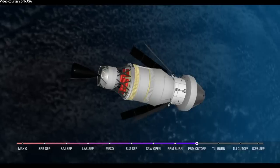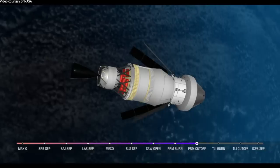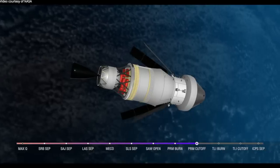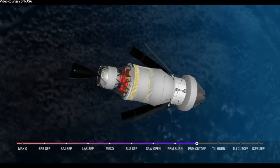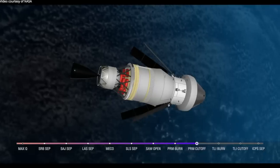And we have confirmation of perigee raised maneuver cutoff. Flight Dynamics Officer reporting on the loops here in Mission Control Houston that it was a good burn. We are now 54 minutes into the flight, Orion traveling 14,700 miles per hour.